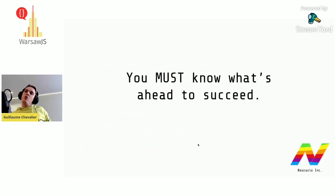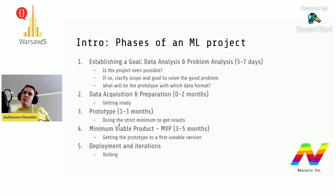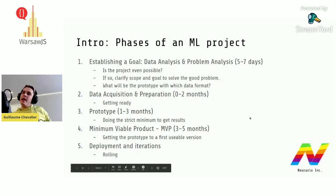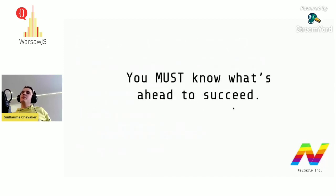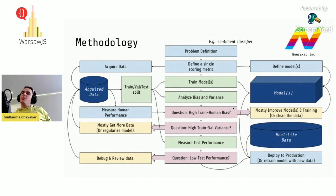You must know what's ahead to succeed: 87% of machine learning projects don't go to production. When you begin prototyping and data acquisition, you need to be prepared to commercialize at the end. So many things can go wrong: the data, the prototype, the licenses, the algorithm, the quantity of data — all must be considered. The most important is the problem definition.